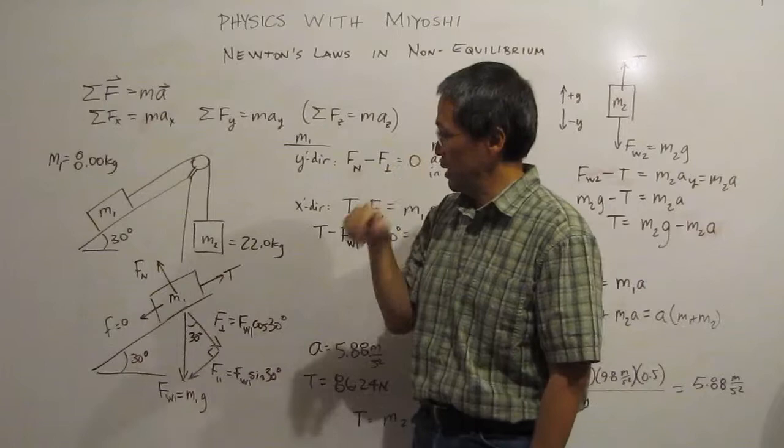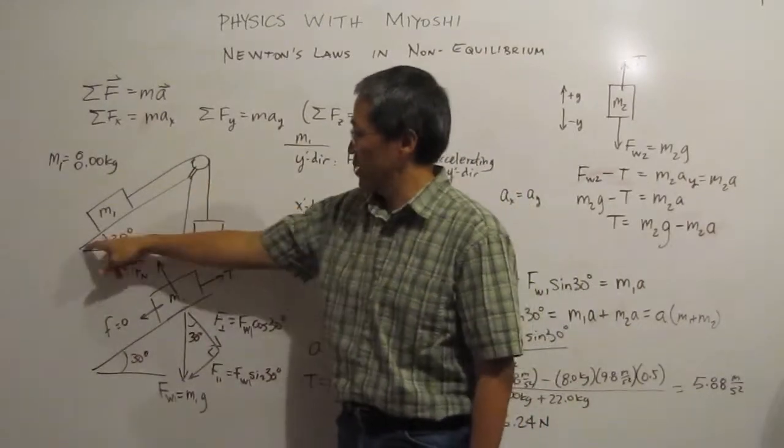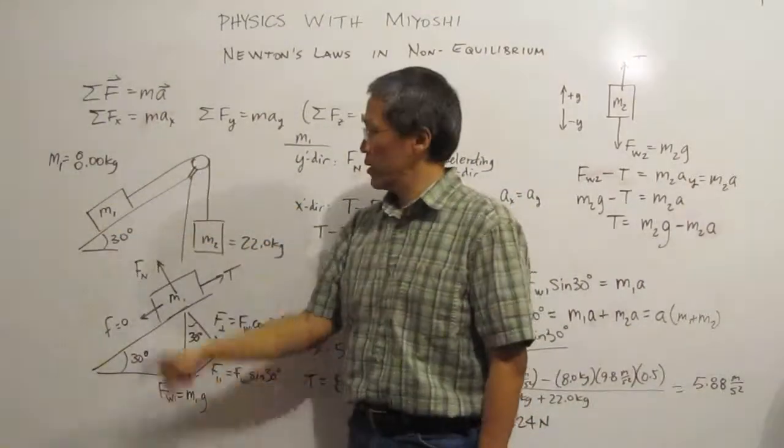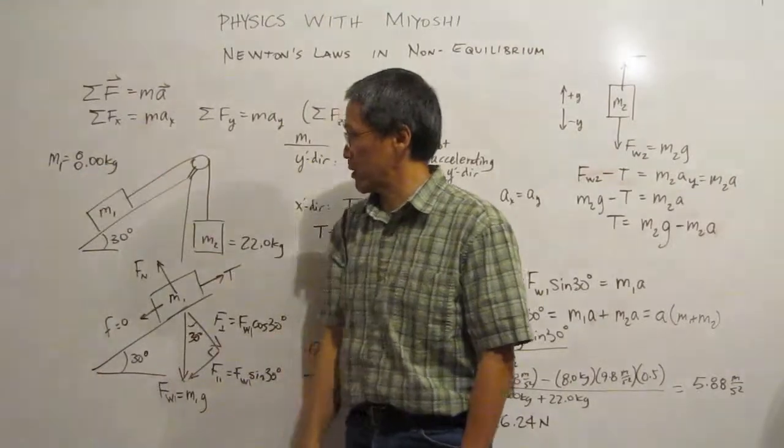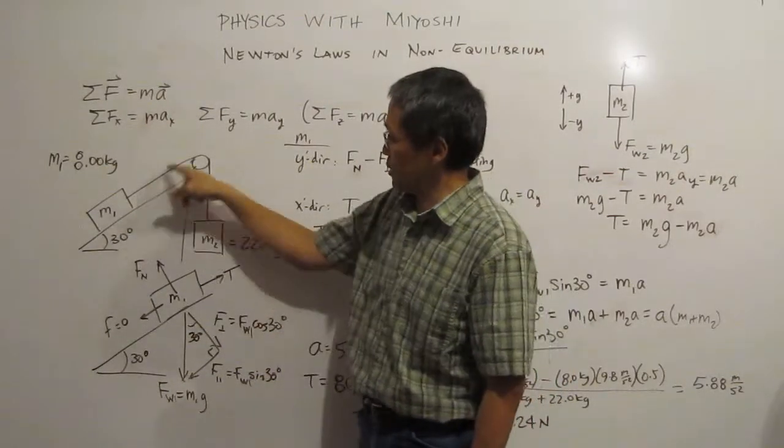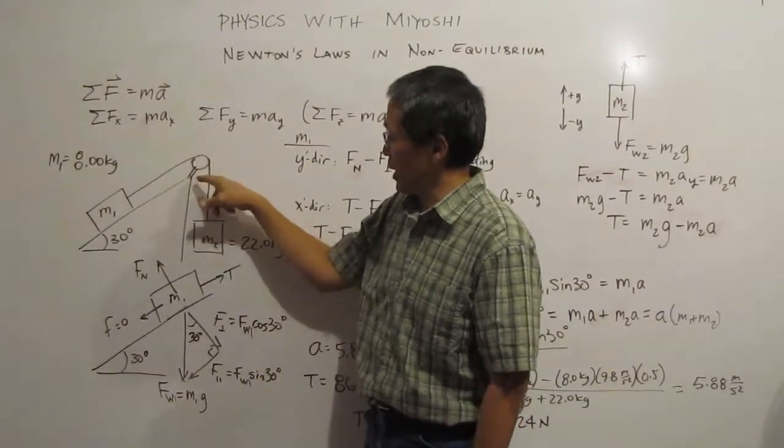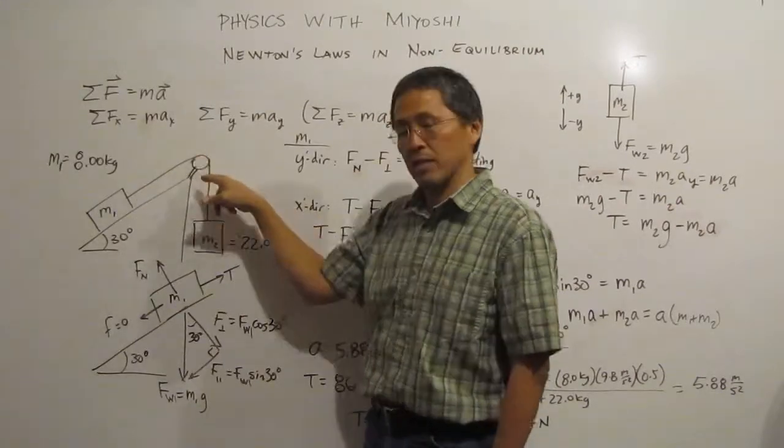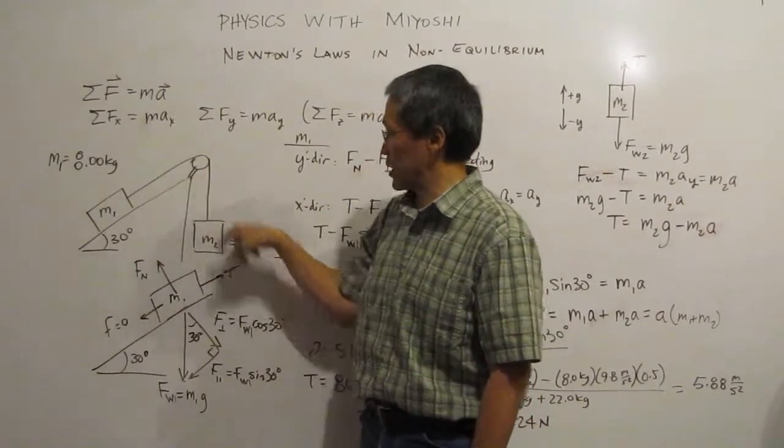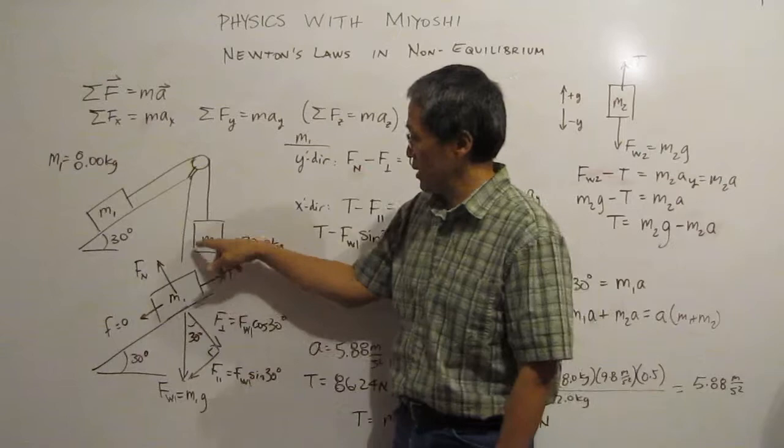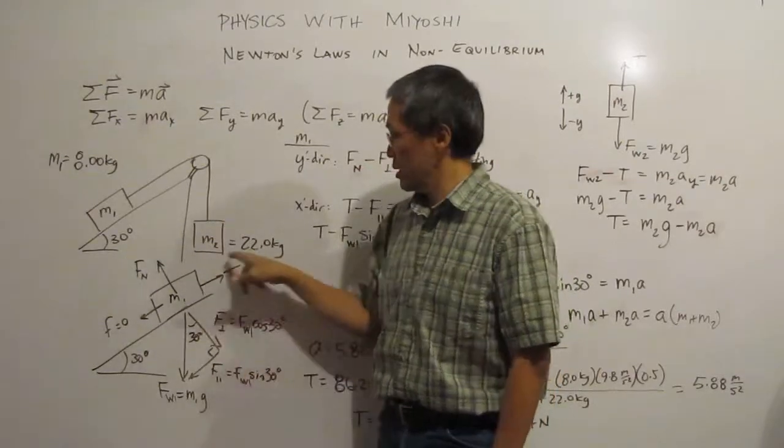So here's a quick problem. We have a frictionless slope and we have a mass of 8 kg on that frictionless slope. It's connected through a pulley, a frictionless and massless pulley and a frictionless rope to a second mass that is 22 kg.